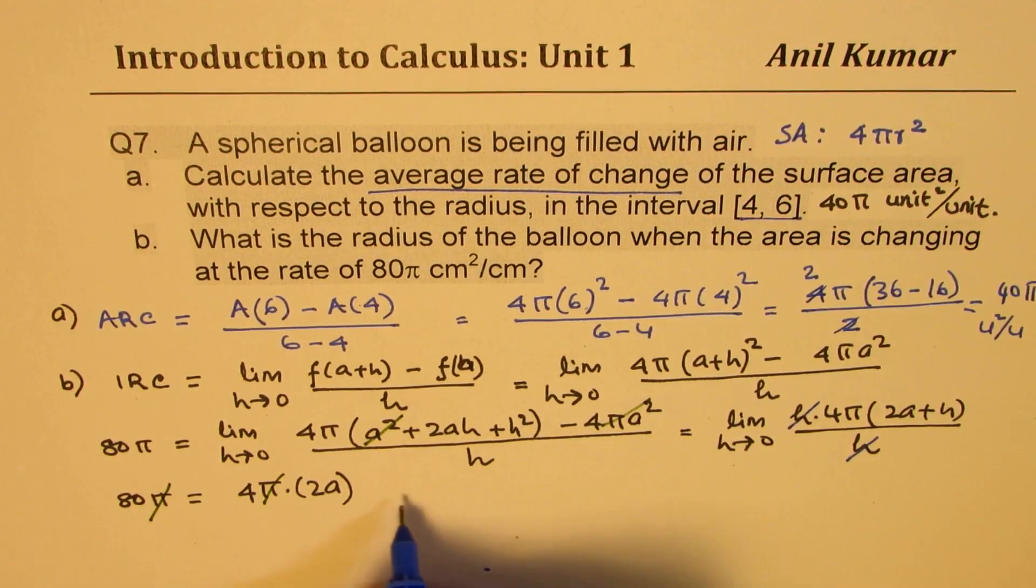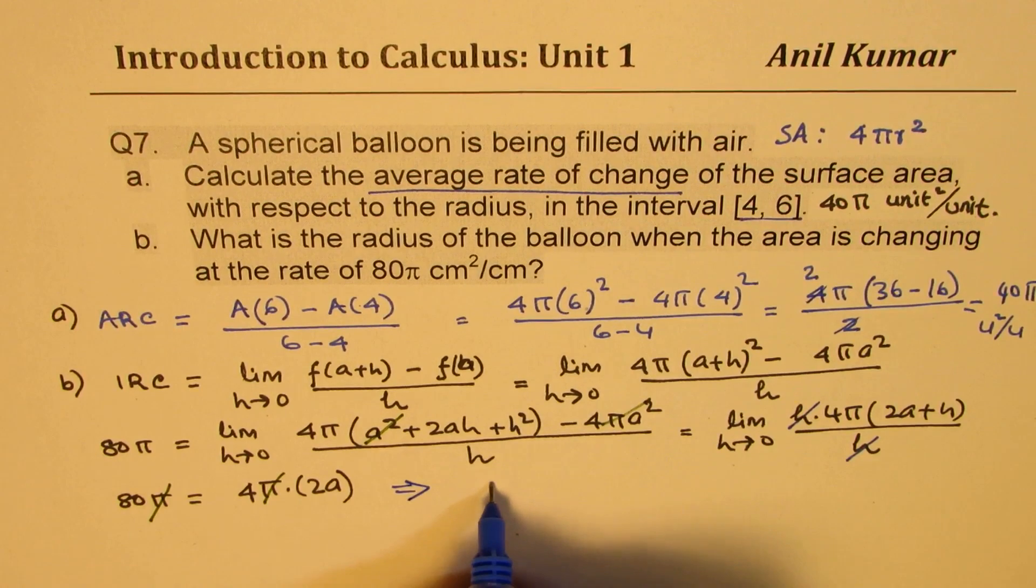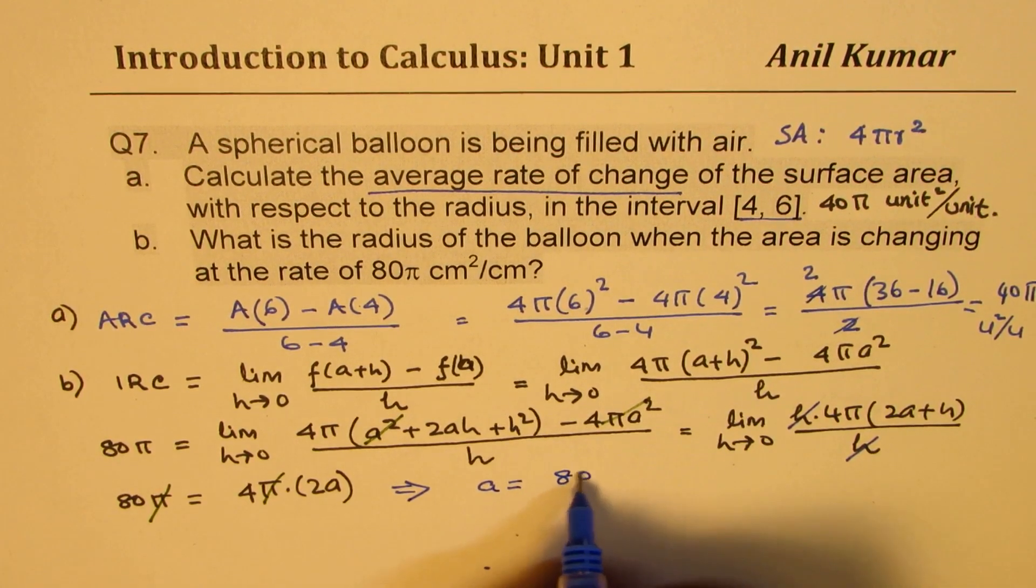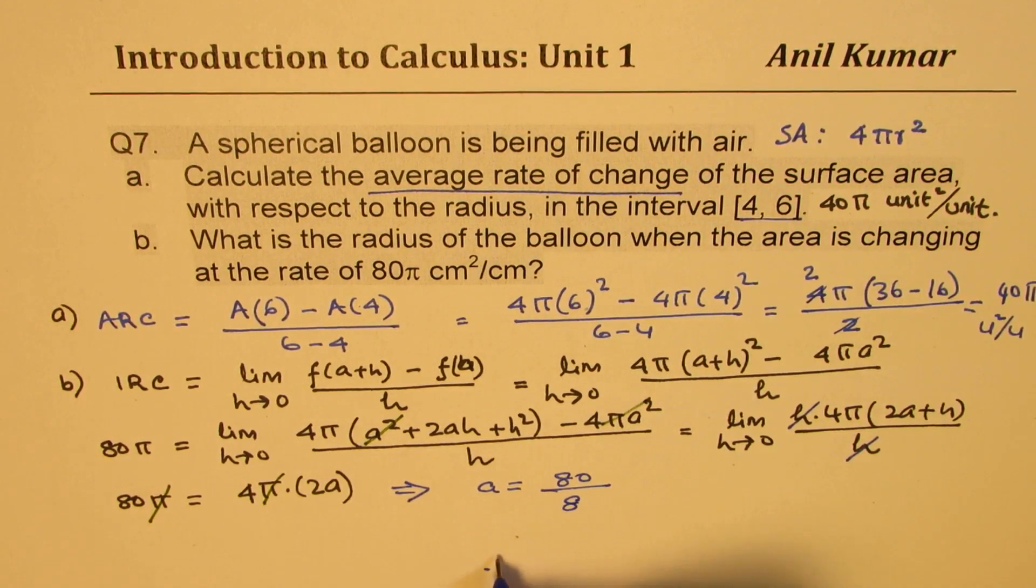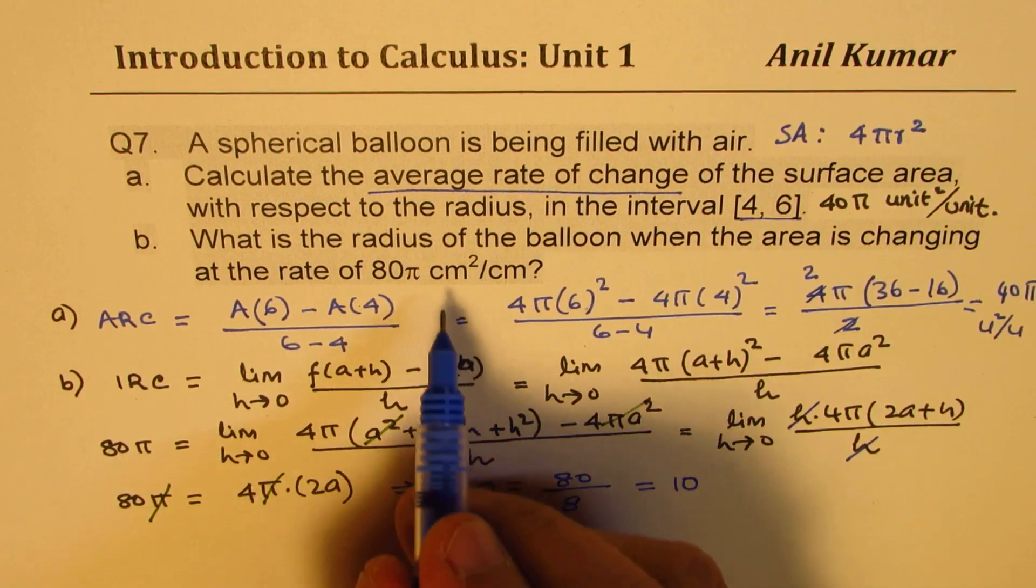So this implies that a is equal to 80 divided by 4 times 2 which is 8. So we get the answer as 10, and the units will be centimeters.